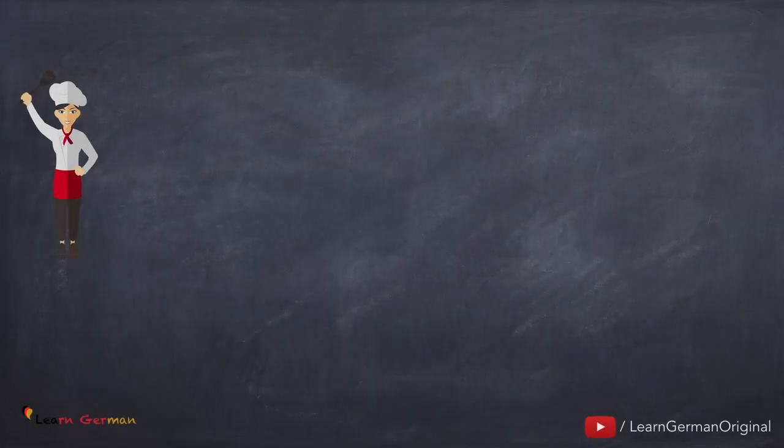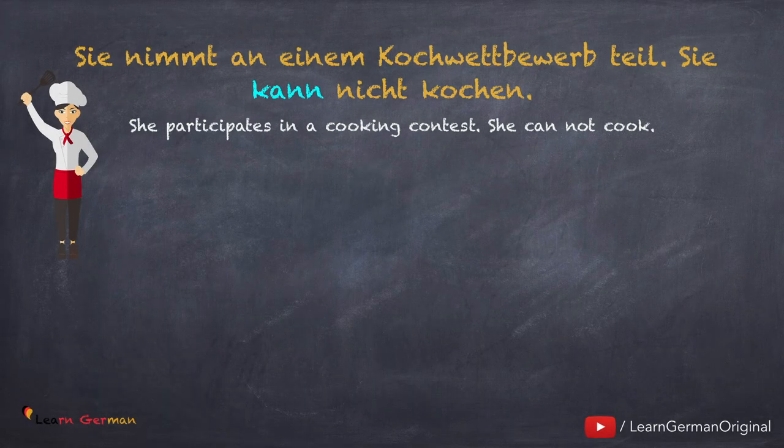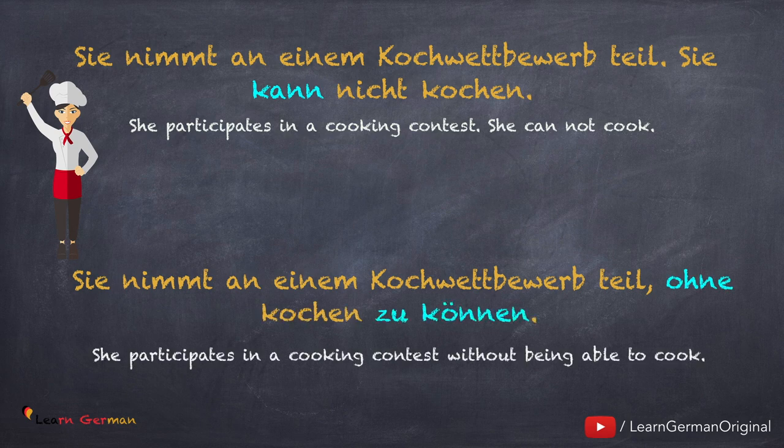Was machen wir, wenn wir ein Modalverb im Nebensatz haben? Hier ist ein Beispiel: Sie nimmt an einem Kochwettbewerb teil. Sie kann nicht kochen. In dem Nebensatz ist das Modalverb kann. Der Satz mit ohne zu ist: Sie nimmt an einem Kochwettbewerb teil, ohne kochen zu können. Das Modalverb steht dann am Ende, im Infinitiv, nach dem zu.